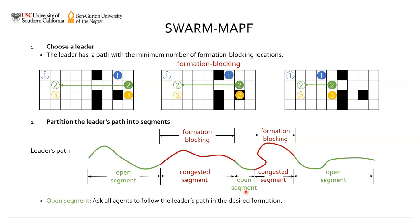We know that for each open segment, the agents can stay in their desired formation without colliding with obstacles. So we simply ask all agents to follow the leader's path in the desired formation for the open segment.